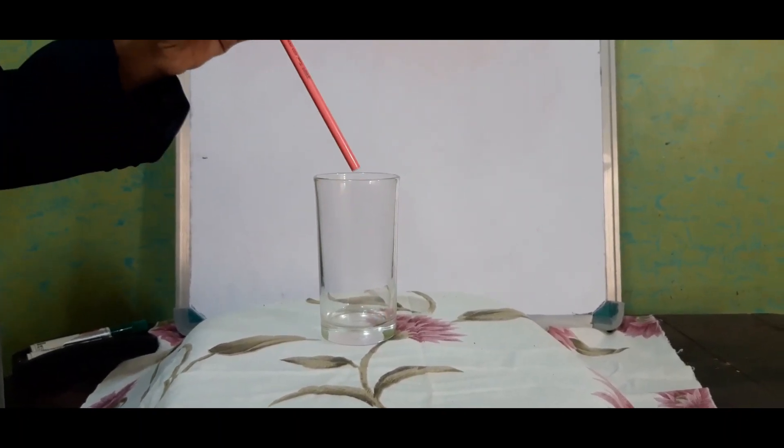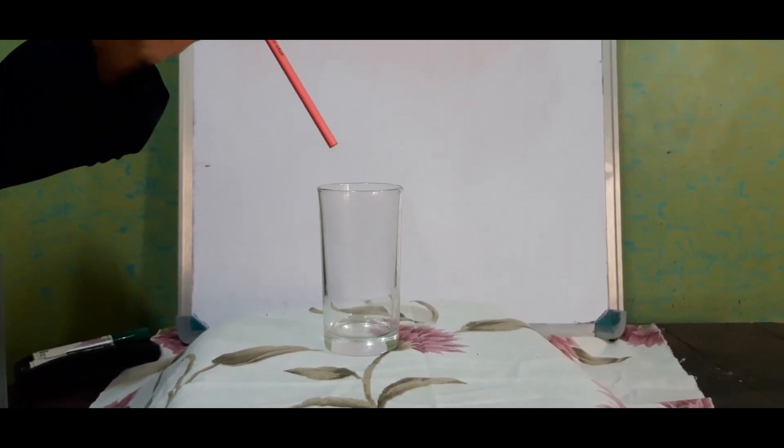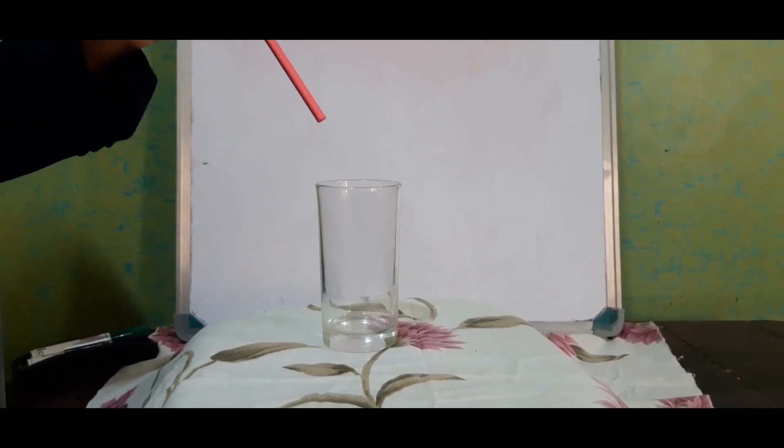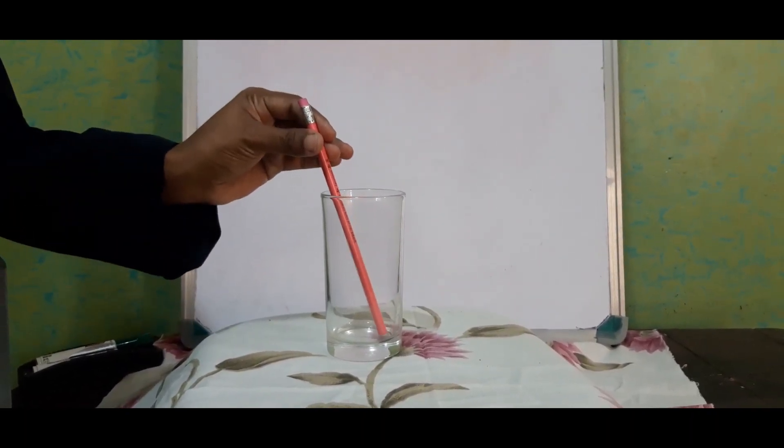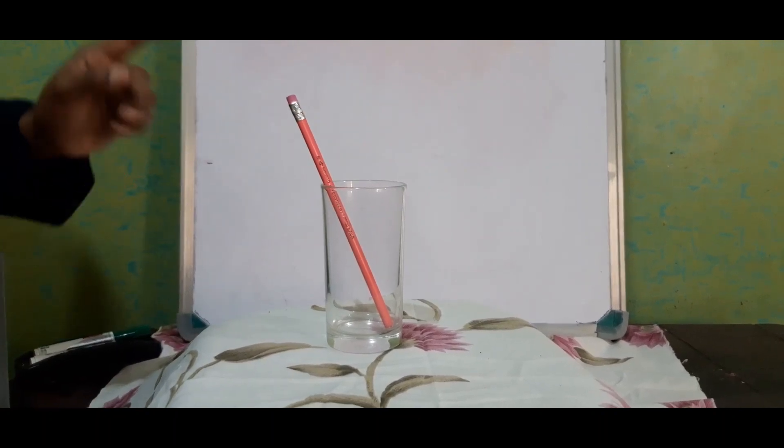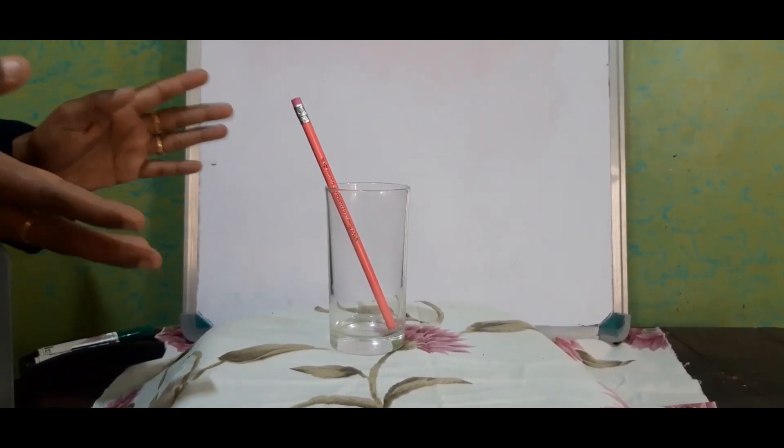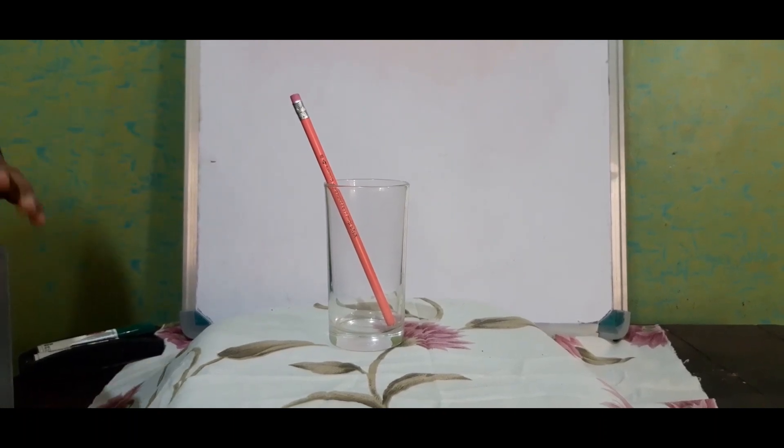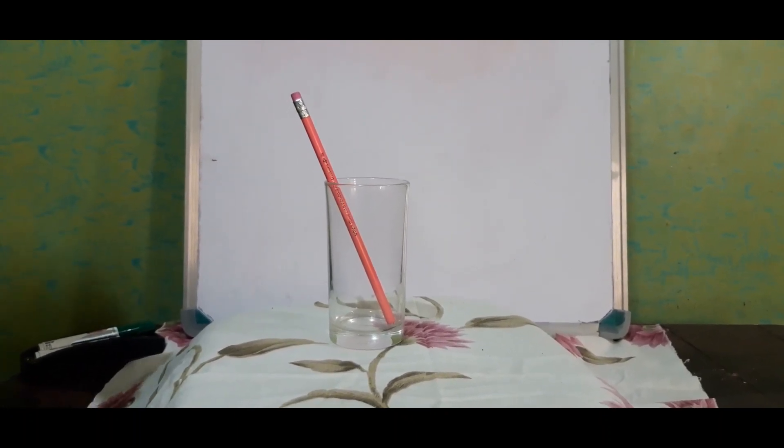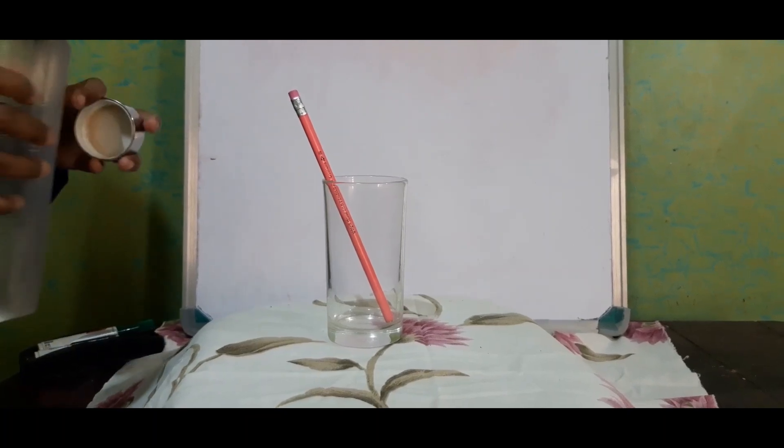Actually this pencil, we are considering it as a straight line or a ray of light which falls on the tumbler. When we are keeping it simply this way, we can see it as a single line or a single pencil without any bending. Now we are going to pour water slowly and see what's going to happen.